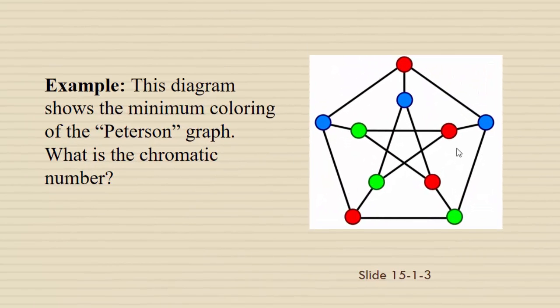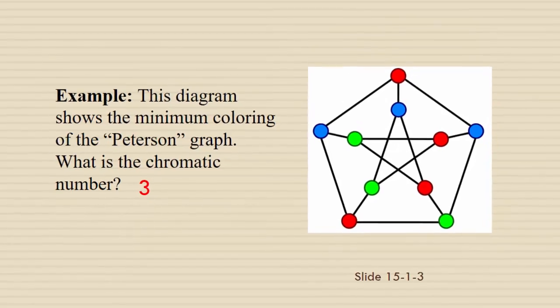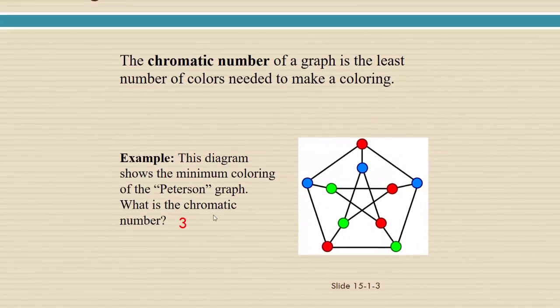This diagram shows the minimum coloring of what's called the Peterson graph. What do you think is the chromatic number? If you said three, you're correct because there are three colors required: blue, red, and green. If we attempted to use only two colors, then we would find it was impossible to avoid having an edge with two of the same color vertices.